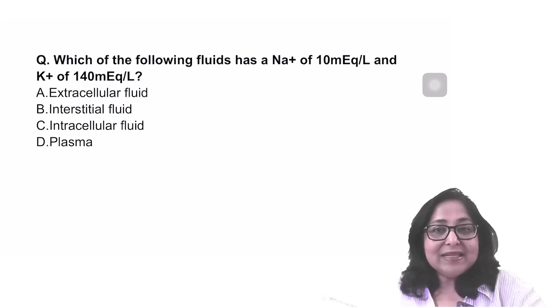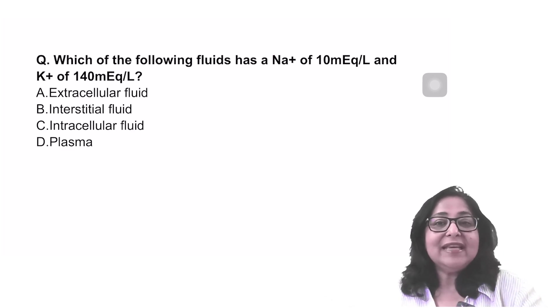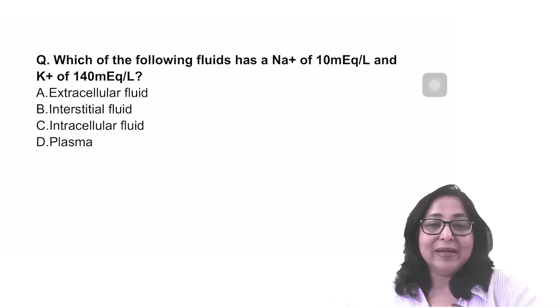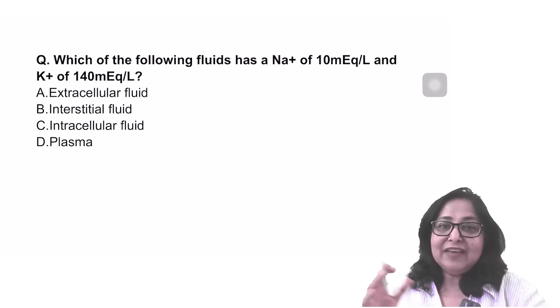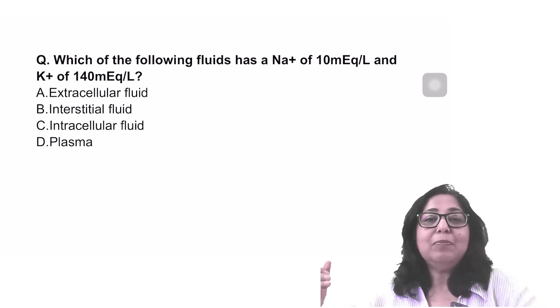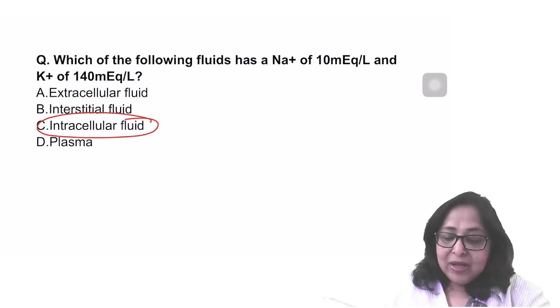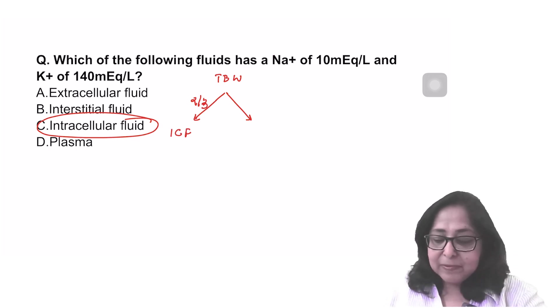Which of the following fluids has a sodium of 10 mEq per liter and potassium of 140 mEq per liter? In other words, the question is asking you which is a sodium poor potassium rich fluid. When you look at the ECF and the ICF, ECF is sodium rich potassium poor and ICF is potassium rich sodium poor. So the answer to this question becomes the ICF.